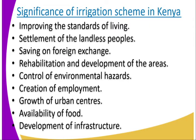One of the significance, one of the importance, is improving the standards of living. When the farmers who are doing the farming in the irrigation scheme — whether employed there or working a piece of land there — they are getting income, which in turn is used to get other things that they don't produce. As a result, there is improvement of the standard of living.